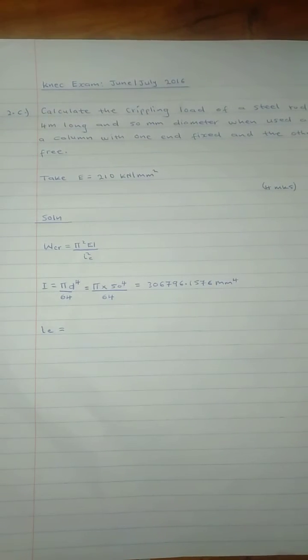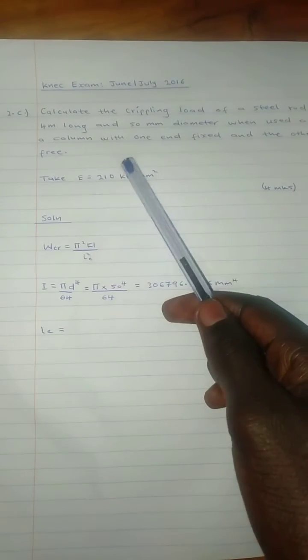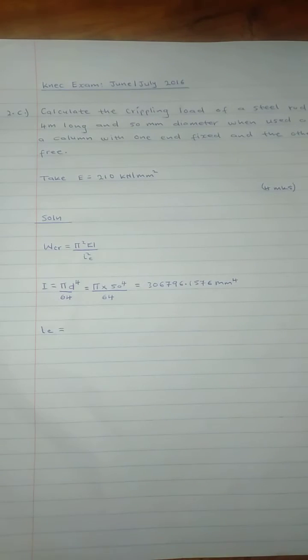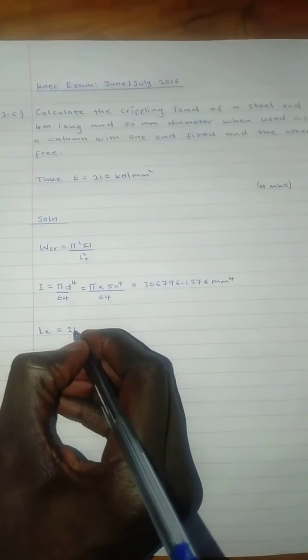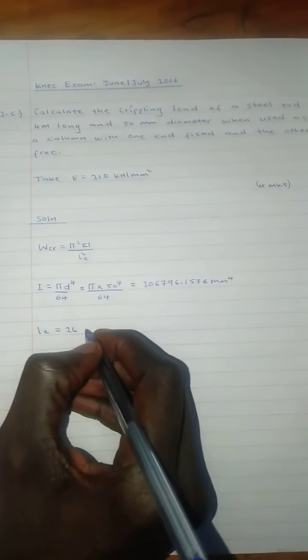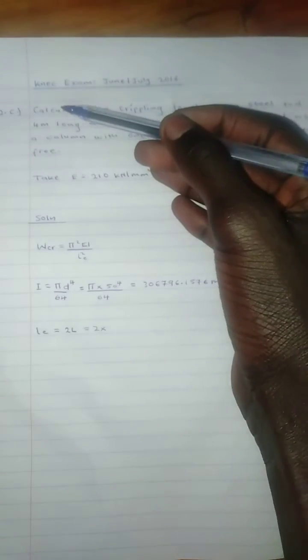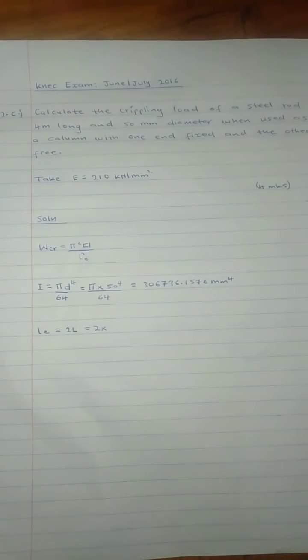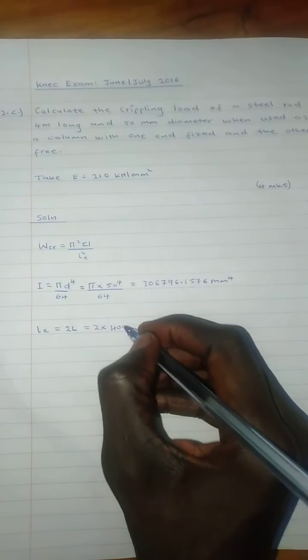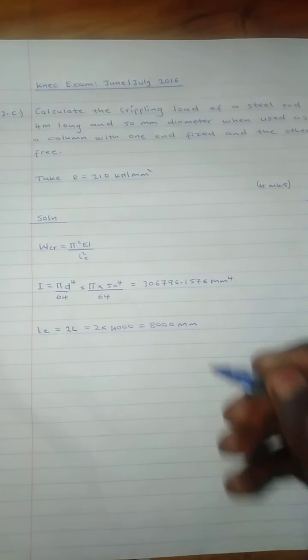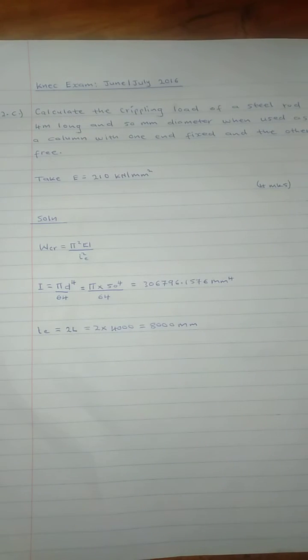Now let's find the effective length. When we are told that the column is fixed at one end and free at the other end, that means the effective length equals two times the length. Our length was four meters, so we'll change that into millimeters. That is our effective length, 8000 millimeters.